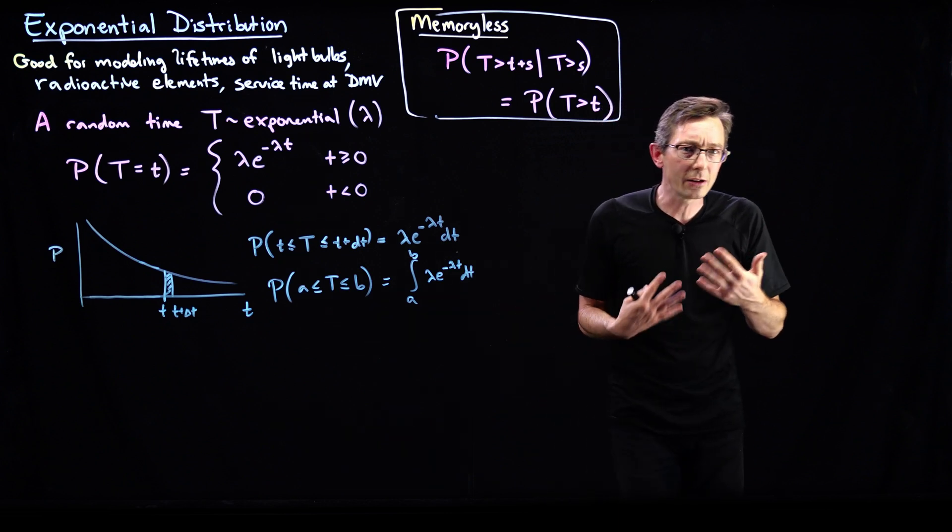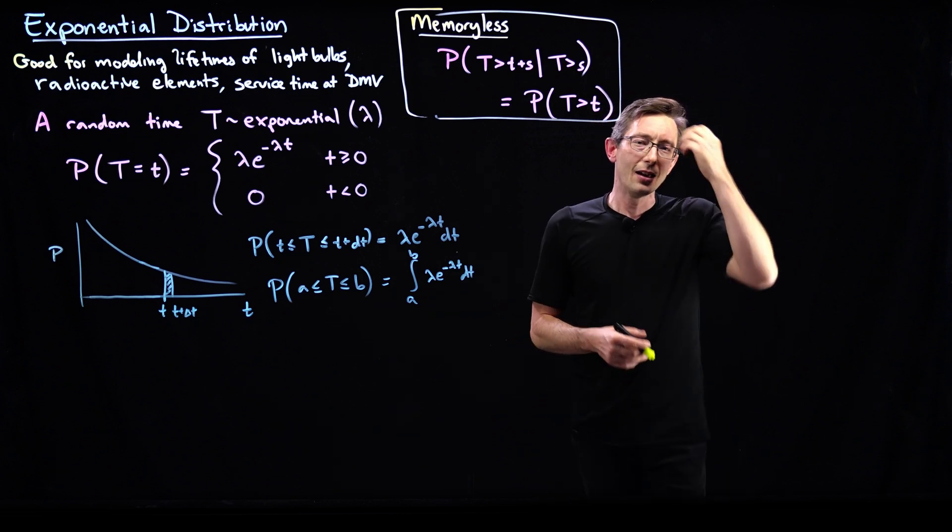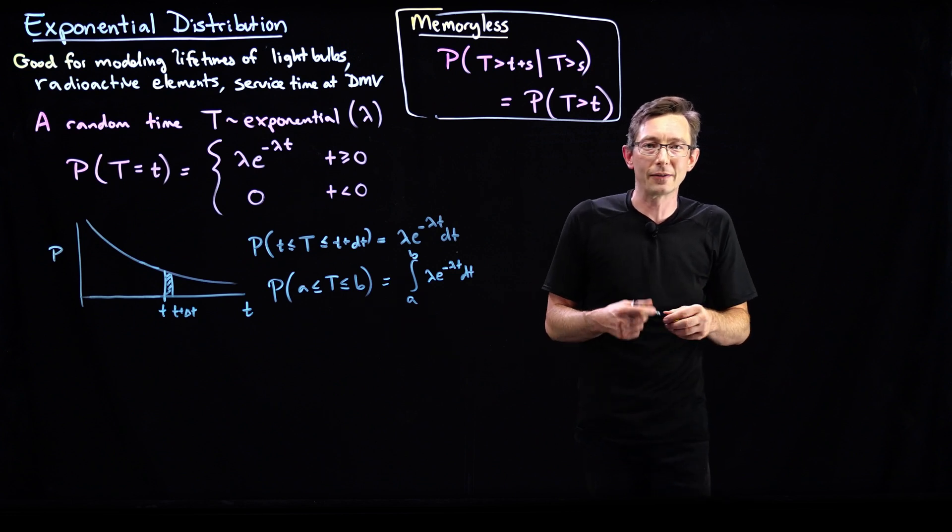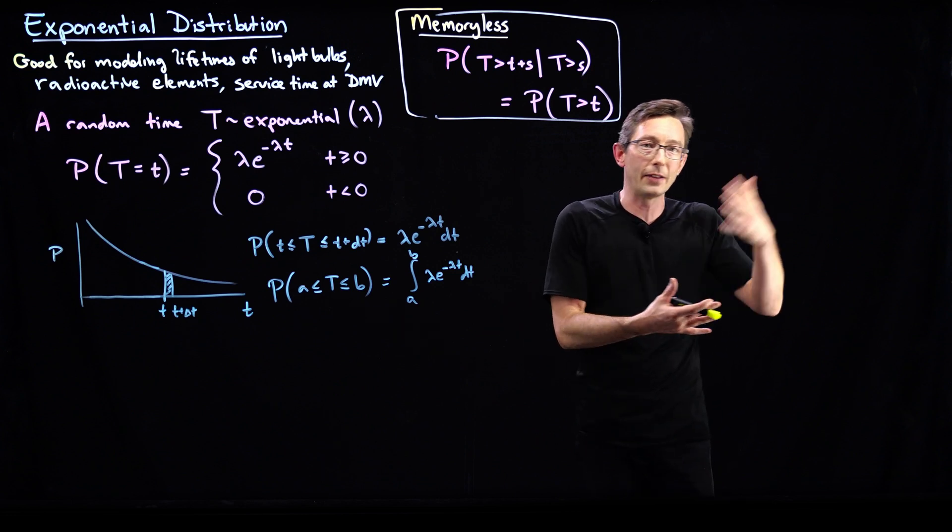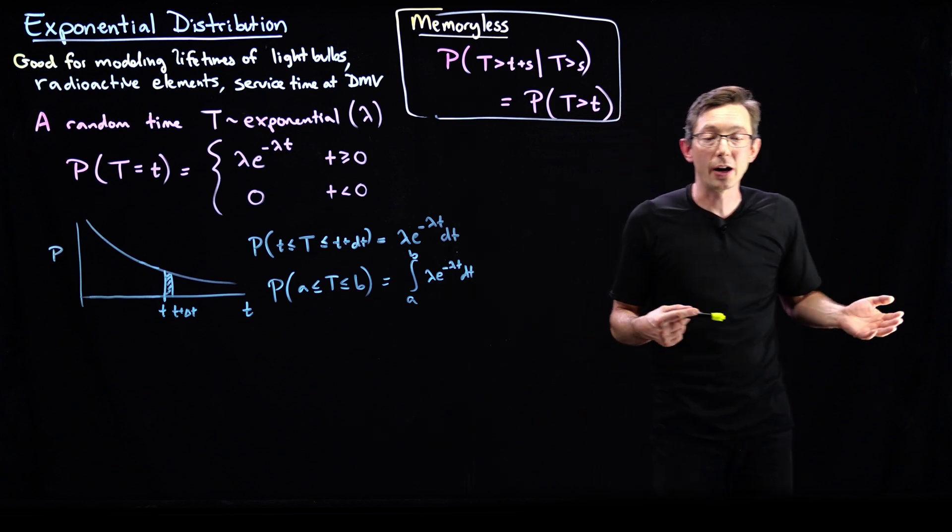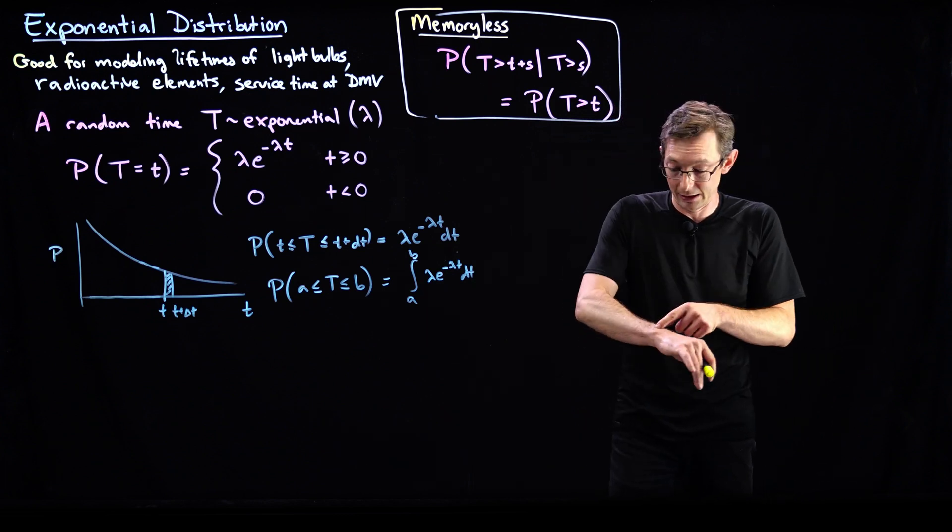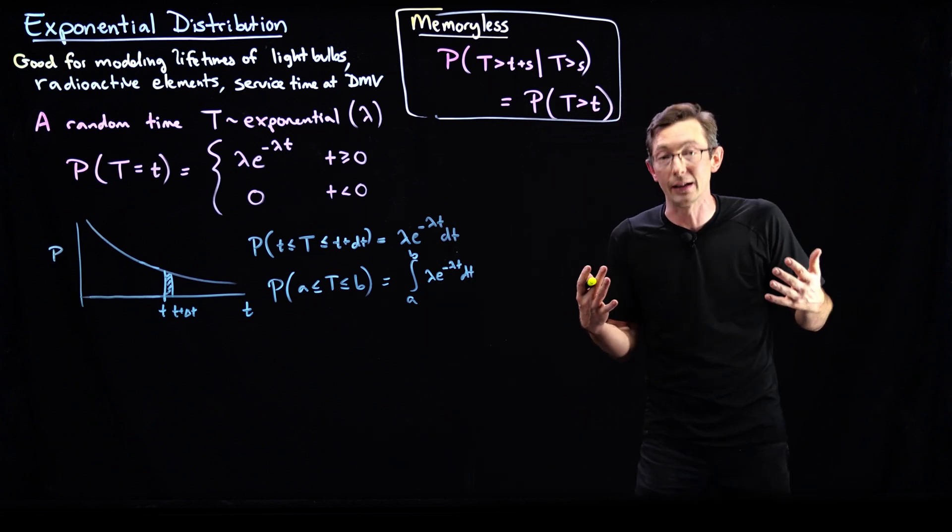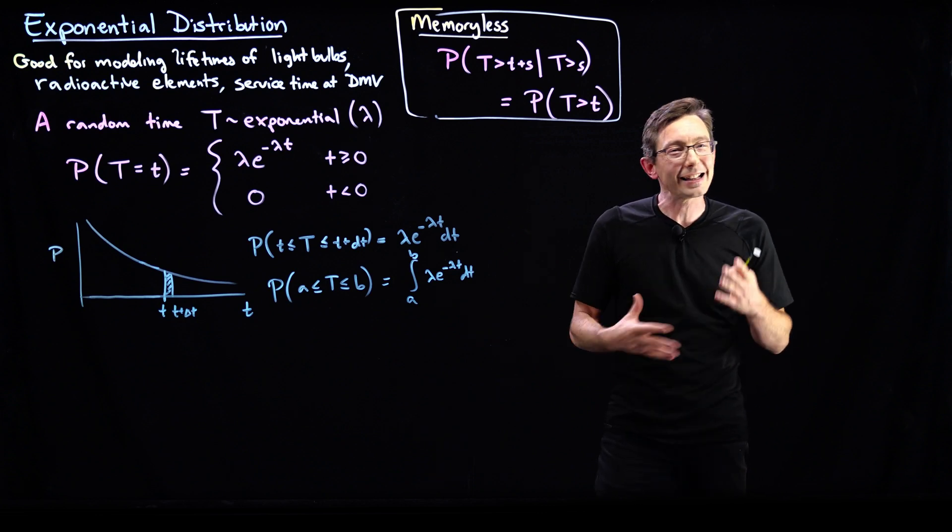And this is a weird notion because we think sometimes we count down these events and we think if a failure rate of a light bulb is a hundred hours, then after a hundred hours passed, I'm counting the seconds, it's going to fail any minute now. And that's not exactly true.